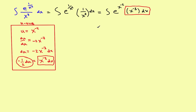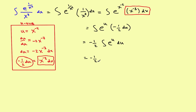The integral becomes the integral of e to the u times negative one-half du. Bringing the constant outside gives negative one-half times the integral of e to the u du. The antiderivative of e to the u is e to the u plus c. Replacing u with x to the negative 2 gives the final answer: negative one-half e to the x to the negative 2 plus c.